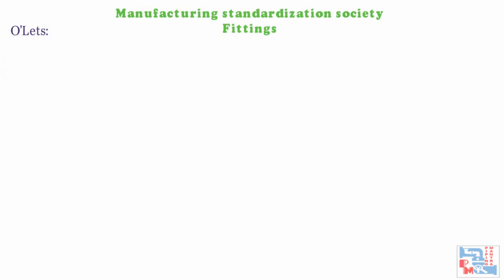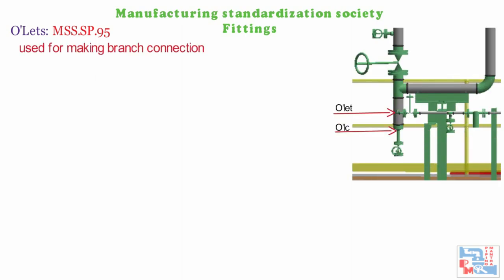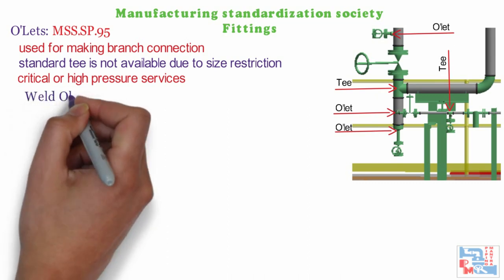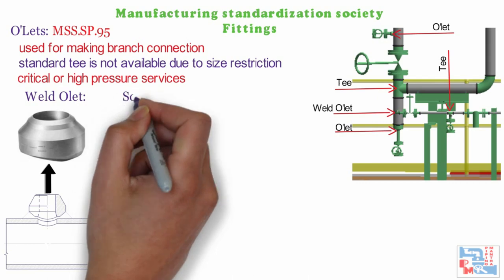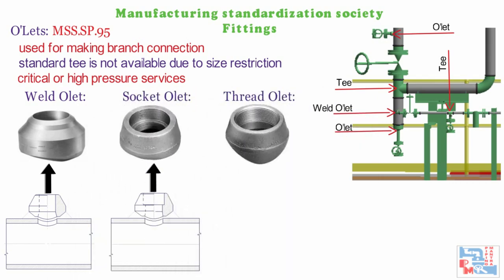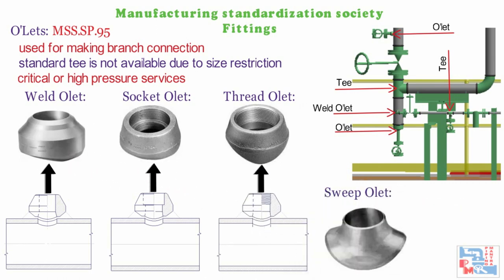Next are olet fittings per MSS SP95. Olets are used for making branch connections where standard Ts are not available due to size restriction, or where critical or high-pressure services prevent direct stub-out welding. Types include: weldolet, for butt welded branch connections; sockolet, for socket welded branch connections; threadolet, for threaded branch connections; and sweepolet, which is similar to a weldolet but has an integrally reinforced pad for butt welded branch connections — though it is weaker than a weldolet strength-wise.